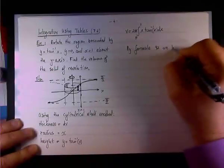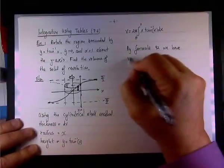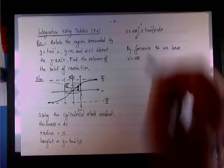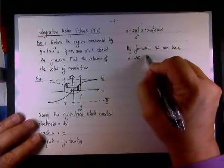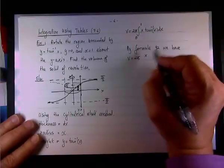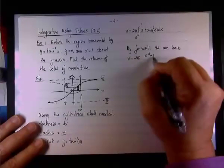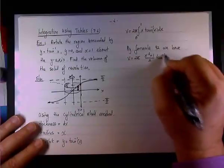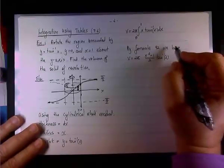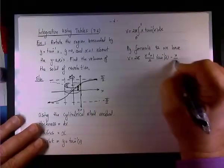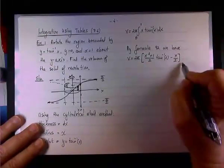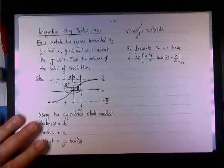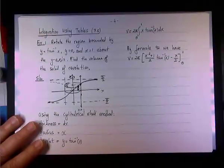And you might be right if you think so. But by formula 92, we have the following: v equals 2 pi times - instead of u is x - so 2 pi and then we have x squared plus 1 over 2 times inverse tangent of x minus x over 2. And remember 2 pi multiplies everything.